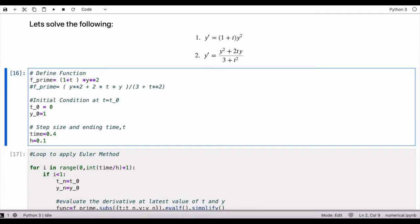We have the initial condition, let's say t naught equals 0 and y naught equals 1. Let's say our step size h is equals to 0.1 and I'm just going to solve it up to t equals 0.4.